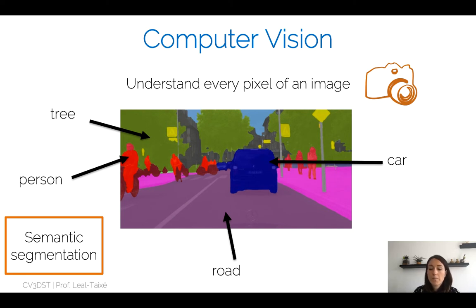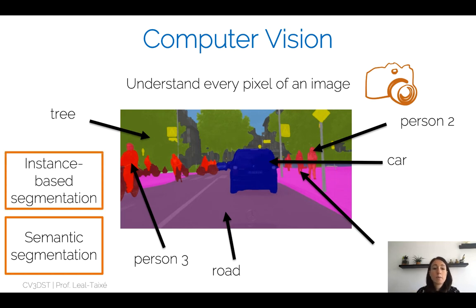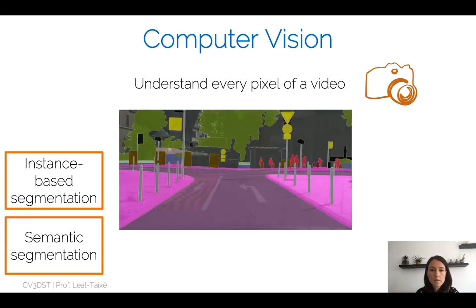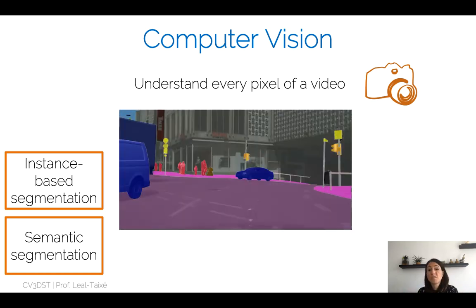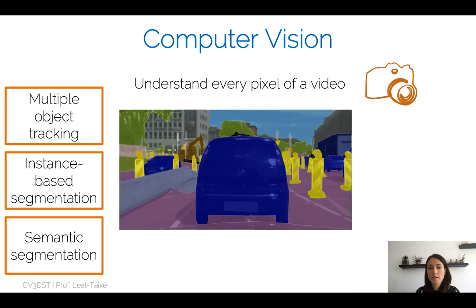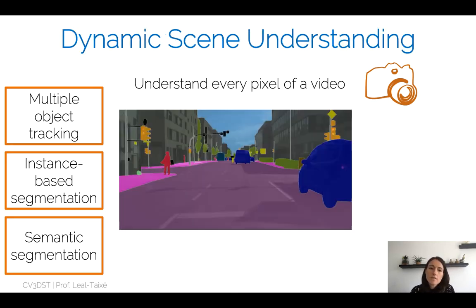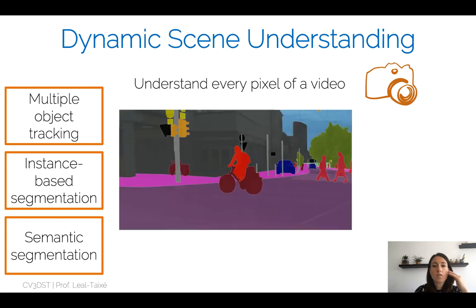Semantic segmentation will be covered in one lecture — how can we approach this task with deep learning. Of course, for certain categories like cars or person, it might not be enough to say all these pixels belong to the class 'person' — we actually want to identify the different instances of this class. This is the task called instance-based segmentation, which we will also cover. And finally, the world is not static — we want to understand every pixel of a video. Hence, we also want to solve the problem of multiple object tracking: detecting these objects, understanding where they are in the image, and following them over time.